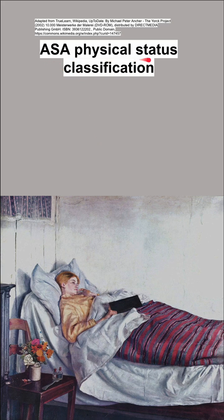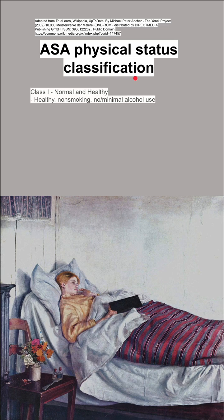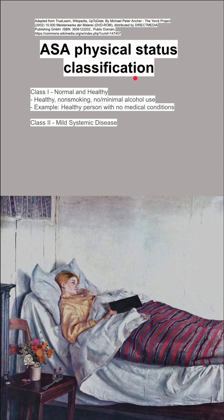This is the ASA physical status classification, a system used to assess a patient's overall health before surgery. Class 1 is considered normal and healthy — for healthy, non-smoking patients with none or minimal alcohol use. An example is a healthy person with no medical conditions.